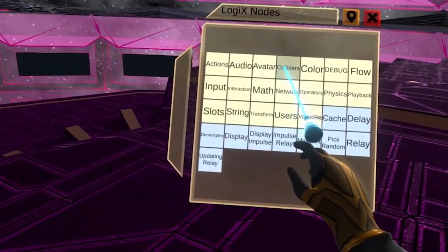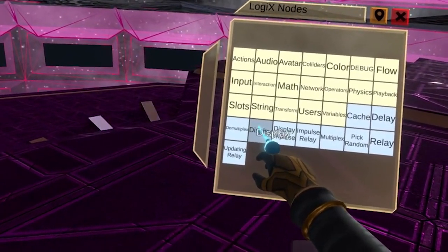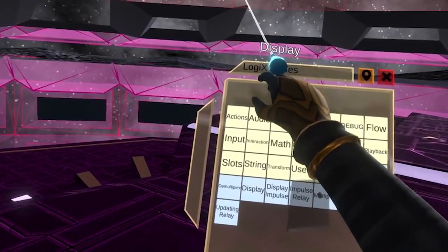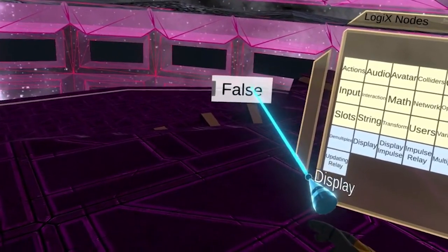If I double press the trigger button while my laser is over display, you'll see that this is shown above the tooltip. We can now point the laser away from the panel and double press the trigger button to create this particular node.